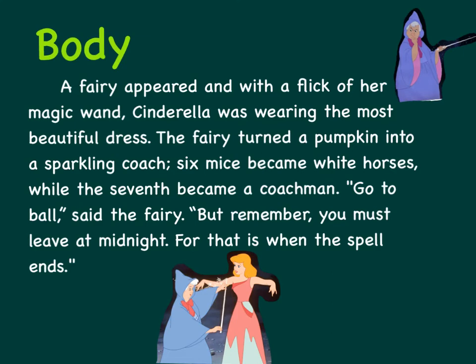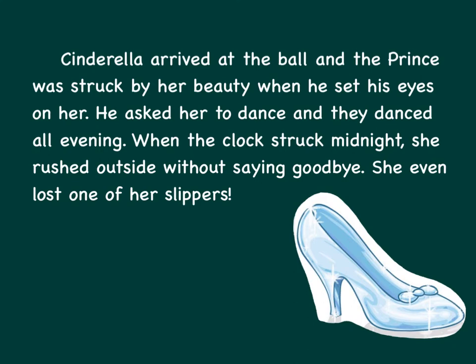Here is the body of the story. A fairy appeared and with a flick of her magic wand, Cinderella was wearing the most beautiful dress. The fairy turned a pumpkin into a sparkling coach. Six mice became white horses, while the seventh became a coachman. 'Go to the ball,' said the fairy. 'But remember, you must leave at midnight, for that is when the spell ends.' Cinderella arrived at the ball, and the prince was struck by her beauty when he set his eyes on her. He asked her to dance, and they danced all evening. When the clock struck midnight, she rushed outside without saying goodbye. She even lost one of her slippers.